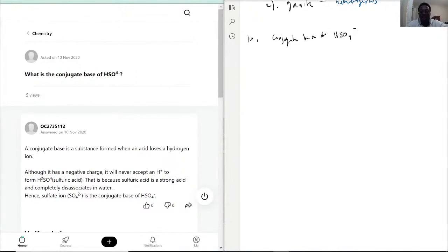So just for context, HSO4 is kind of like hydrogen sulfate ion, I believe that's what it's called, hydrogen sulfate.